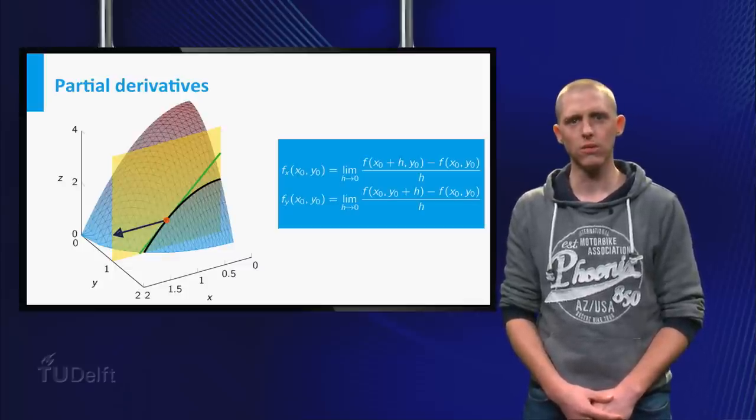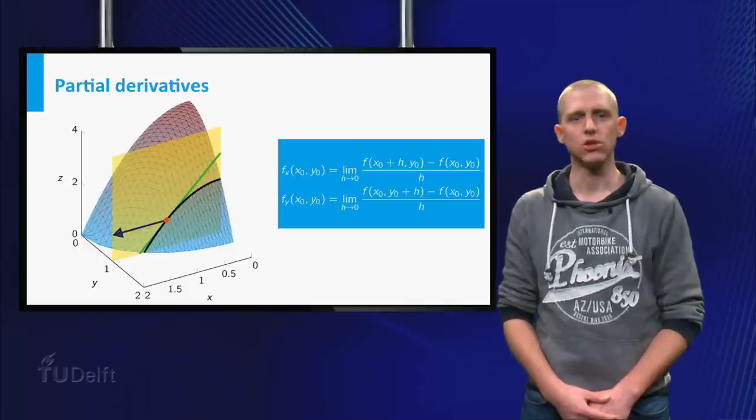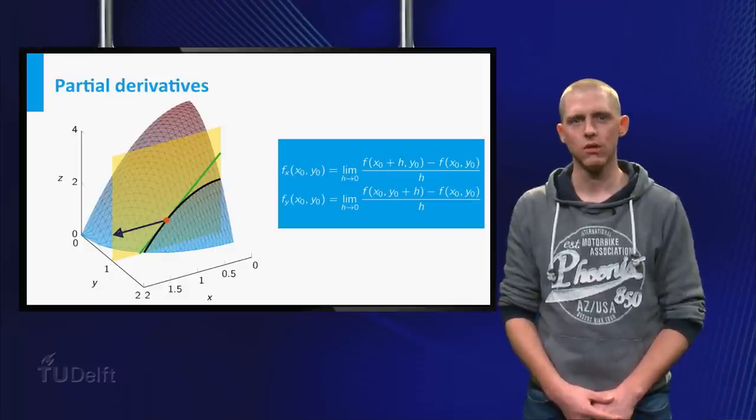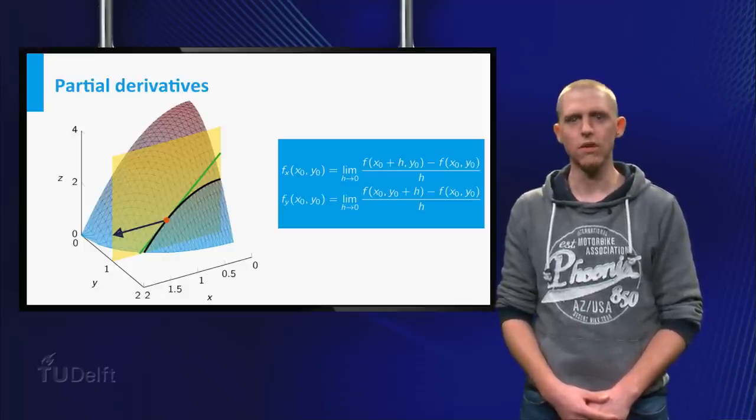For the partial derivative with respect to x, you do a small step of length h in the x direction and calculate the rate of change. Finally, you take the limit of h going to 0 and hopefully arrive at a value.